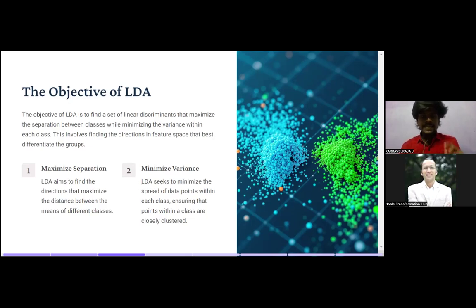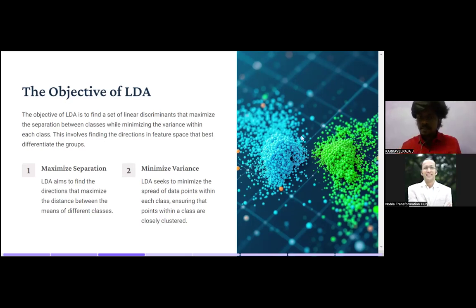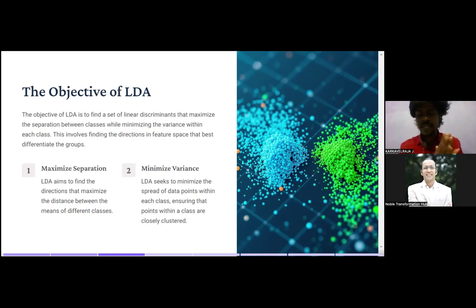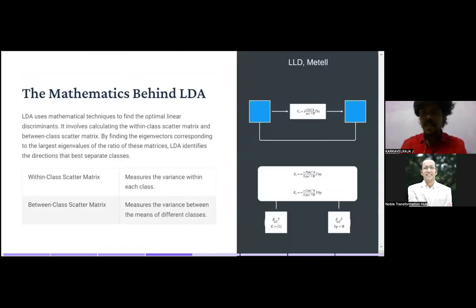The second objective is to minimize the variance within each class. LDA seeks to minimize the spread of data points within each class so that the data points within a class cluster closely together. You need to minimize the distance between the blue dots because they all belong to the same class, and similarly minimize the distance between the green dots. So: maximize separation between classes, minimize variance within classes — those are the two objectives.